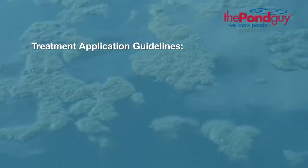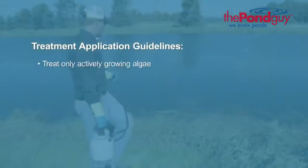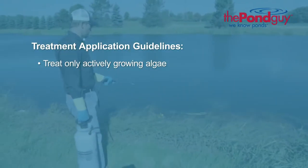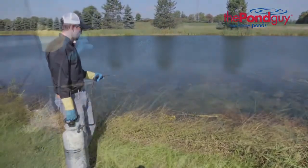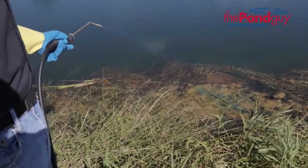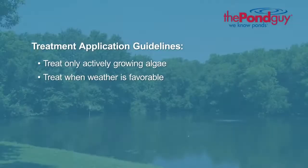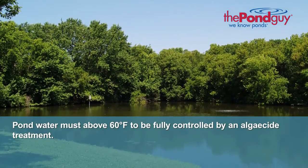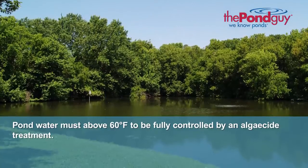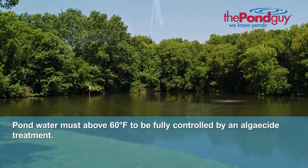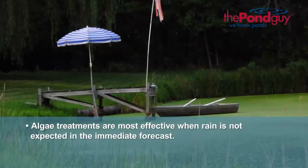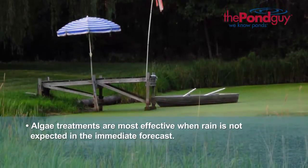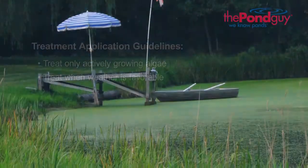Follow these guidelines for successful algae treatment. Treat only actively growing algae — algae must be present and actively growing in the pond, and the treatment must make direct contact and absorb into the algae to be effective. Treat when weather is favorable. Though algae can grow in colder temperatures, pond water should be above 60 degrees Fahrenheit to be fully controlled by an algaecide treatment. Algae treatments are most effective on a day when rain is not expected, as this allows for adequate absorption time.